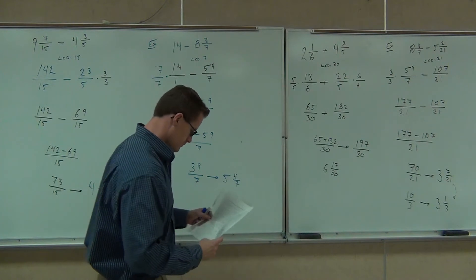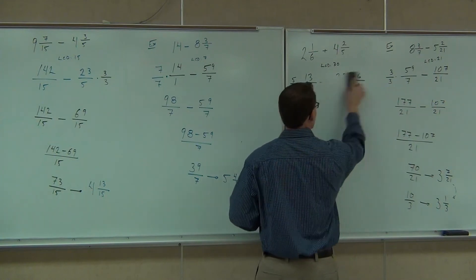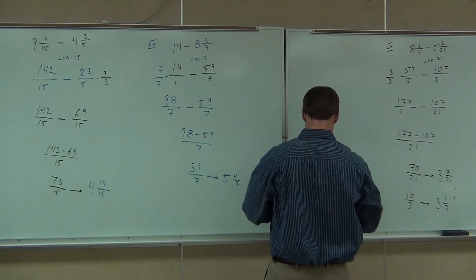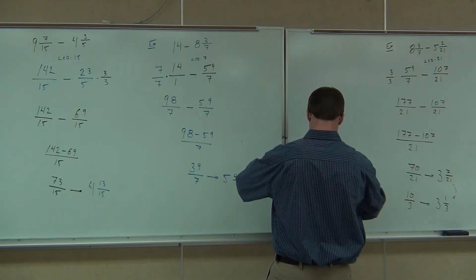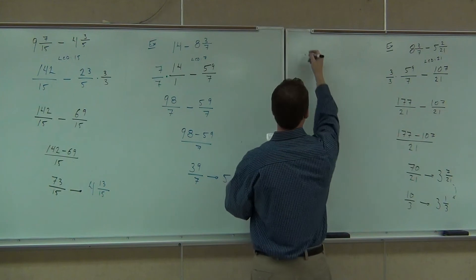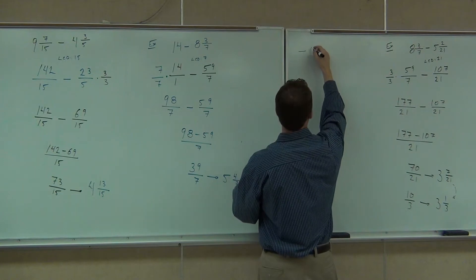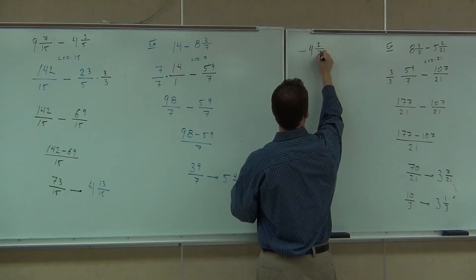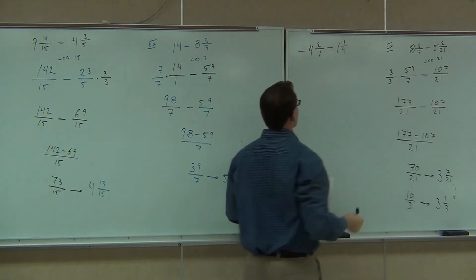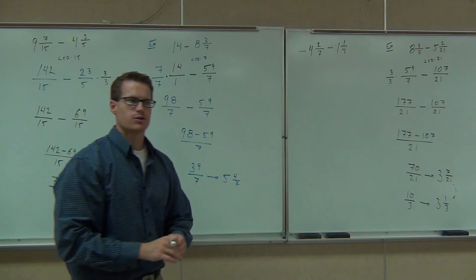So our answer is 5 and 4/7. Now let's deal with some negatives — we haven't done that in a while. Let's do negative 4 and 2/7 minus 1 and 1/4, and see how that works out for us.